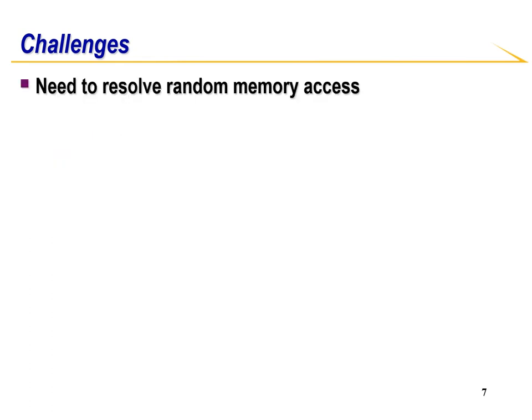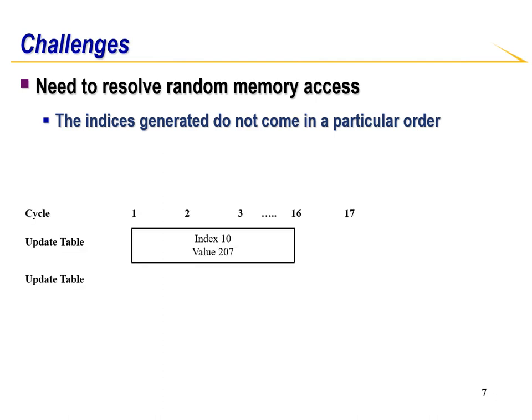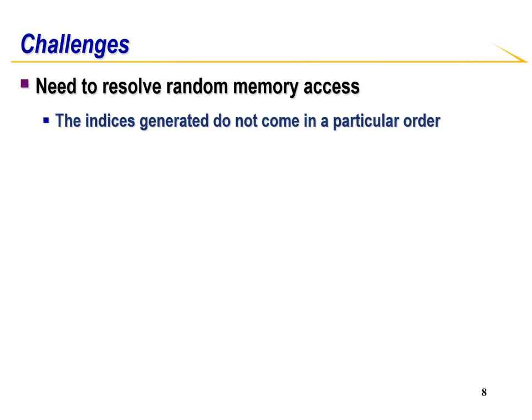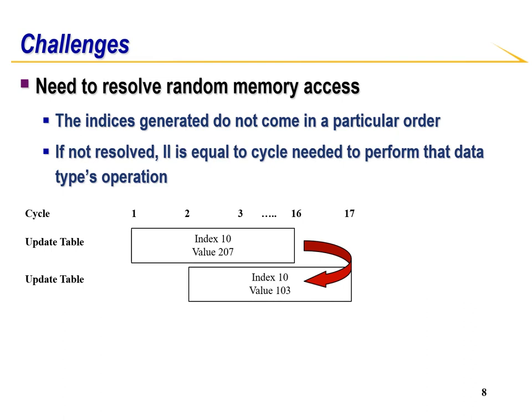Another challenge is to resolve random memory access. In BQSR, the indices do not come in a particular order. For example, in one iteration index 10 comes first, then it is followed by index 11 — here there is no memory conflict. However, in the next iteration, index 10 comes first again, followed by another index 10. There is a memory access conflict since the first update has not completed. This means that the pipeline interval is equal to the number of cycles needed for that data type operation. In BQSR, this is a double precision operation.